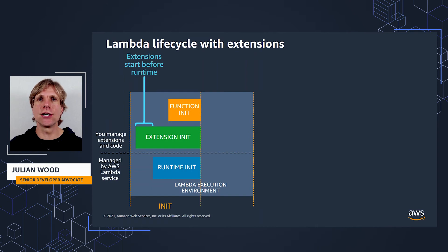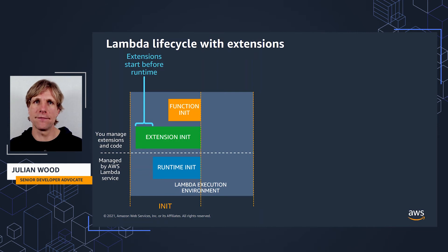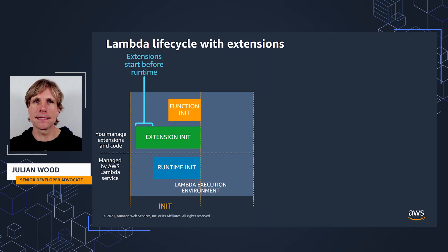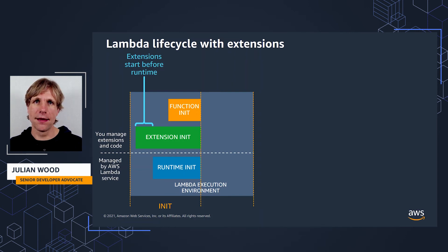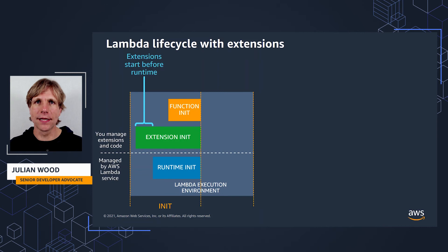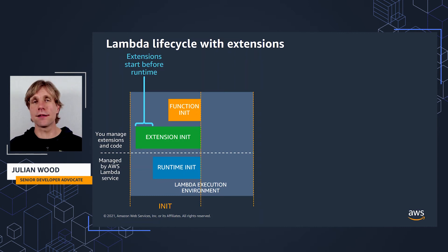An extension initializes and can do some setup tasks. It registers with the Extensions API to tell Lambda what events it wants to receive. It then completes other setup tasks — such as, with the App Config example, running a local HTTP server and caching configuration settings. For an observability extension, this could be registering with the observability platform and starting to gather telemetry data. A log extension would start its log streaming receiver. Then the Runtime process starts and initializes the function to run the code outside the handler.